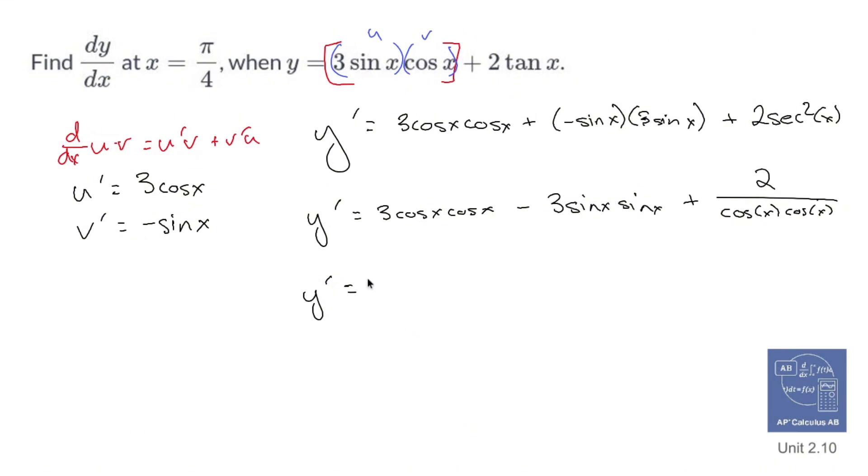All right, Y prime, when I plug in pi over 4, so Y prime of pi over 4 is going to be 3 cos pi over 4 cos pi over 4